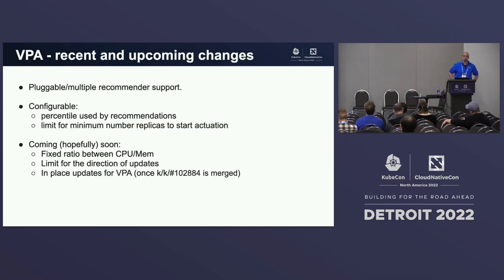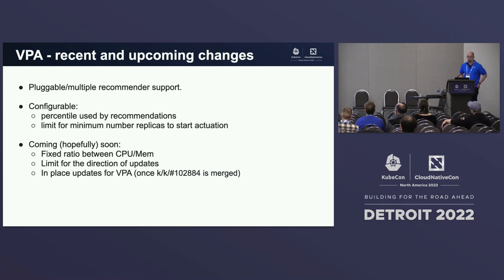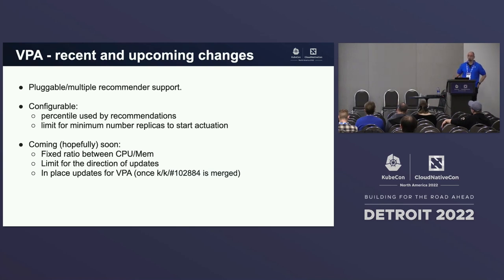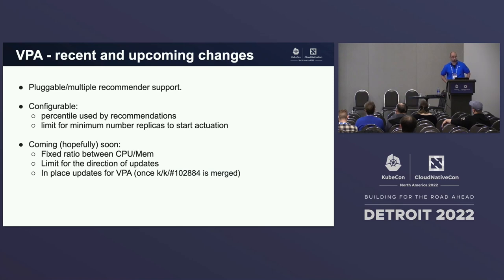Vertical Pod Autoscaler has also been around for a while, but SIG managed to make a couple of important improvements. The biggest one is probably the ability to have multiple recommenders running at the same time. Each recommender, which recommends what the pod size should be, may have a different configuration or even a completely different algorithm, and you can decide which one to use by providing its name in the VPA object specification.